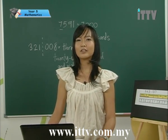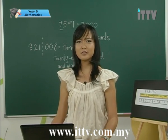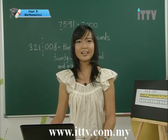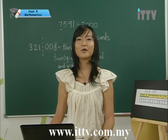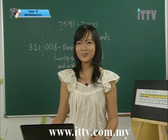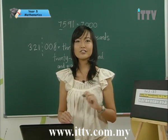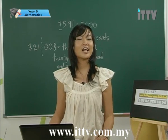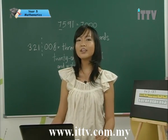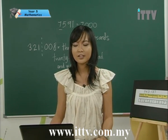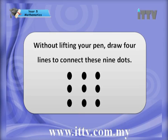I'm sure you've had a lot of fun with thousands, hundred thousands, and ten thousands. Now let's take a break with a brain teaser. Without lifting your pen, draw four lines to connect these nine dots. Draw the nine dots on your paper and try as hard as you can to use only four lines to connect all the dots together.